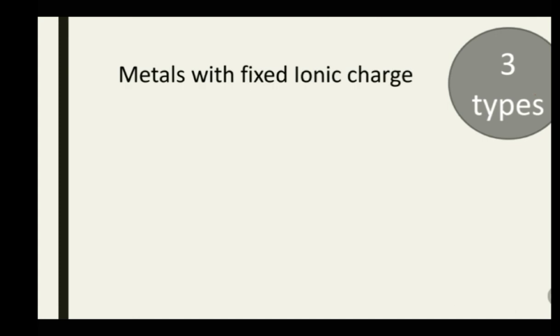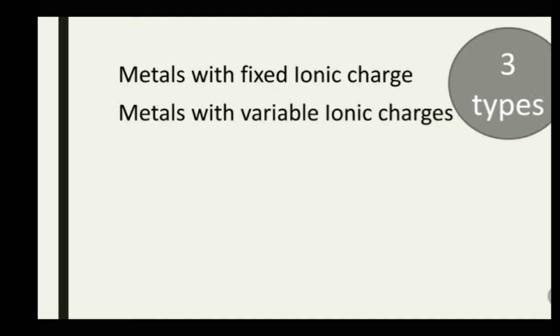We have three types of binary compounds: ones that consist of metals with fixed ionic charges, ones that have metals with variable ionic charges, and ones that consist of two non-metals. In today's video we'll be talking about the ones that have fixed ionic charges — that is, metals with fixed ionic charges.